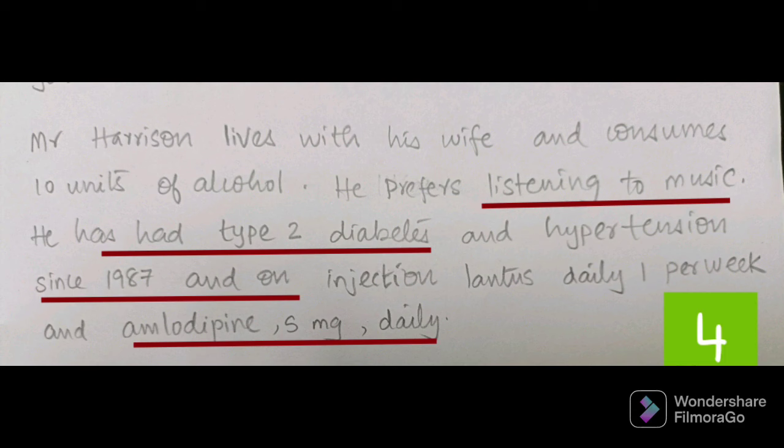For the social paragraph: 'Mr. Harrison lives with his wife and consumes 10 units of alcohol. He prefers listening to music.' Then regarding the medical background: 'He has type 2 diabetes and hypertension since 1987, and is on insulin Lantus twice daily and amlodipine 5 mg daily.' In case of medication, keep a comma in between each item. This is the social paragraph.